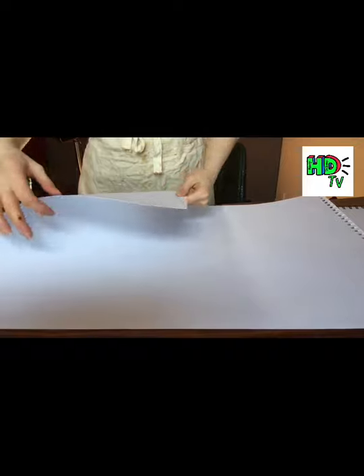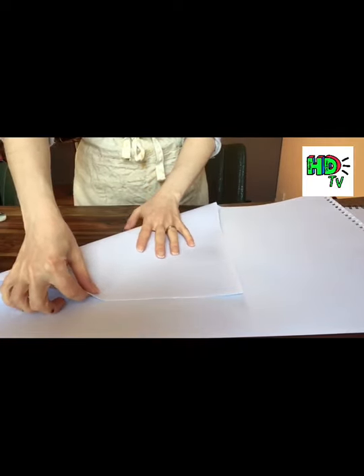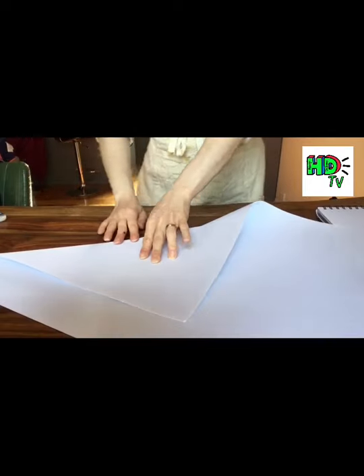Taking a piece of paper we are going to fold over the corner to create a triangle shape with the long side of the triangle the folded edge.